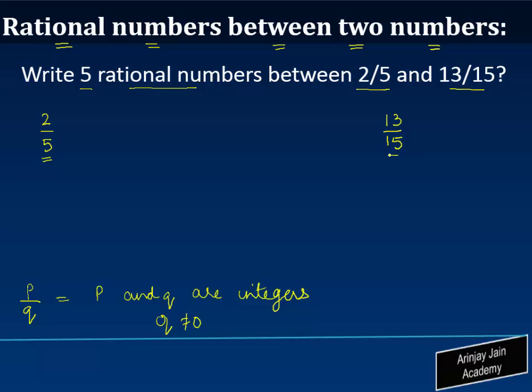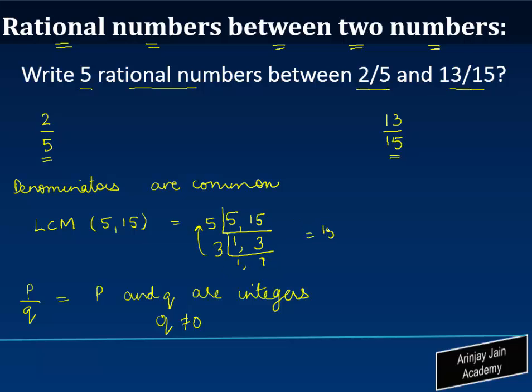For that what we need to do is find out the LCM of the two denominators which is 5 and 15 in our case. So if we find out the LCM of 5 and 15: 5 times 1 is 5, 5 times 3 is 15. So 3 times 5, or 15 actually, is the LCM of these two numbers.